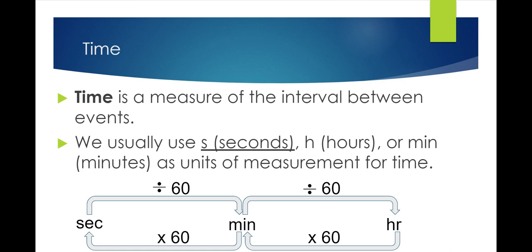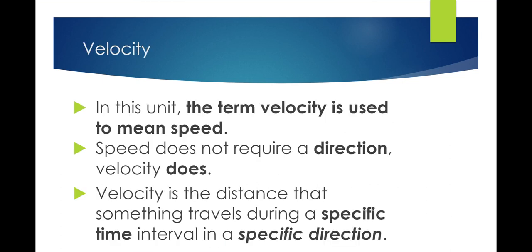Time is a measurement of the interval between events. We usually use seconds, hours, or minutes as units of measurement. Seconds to minutes: divide by 60. Minutes to hours: divide by 60. Hours to minutes: multiply by 60. Minutes to seconds: multiply by 60.